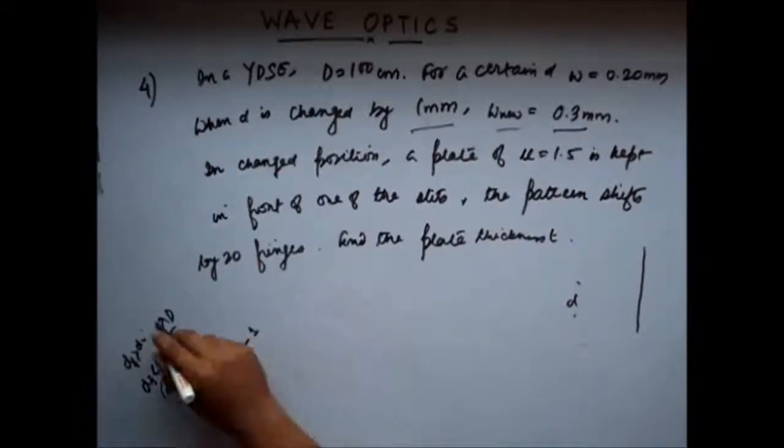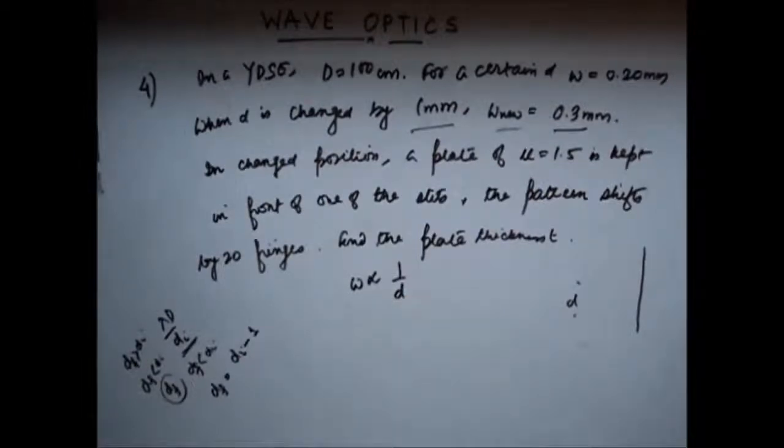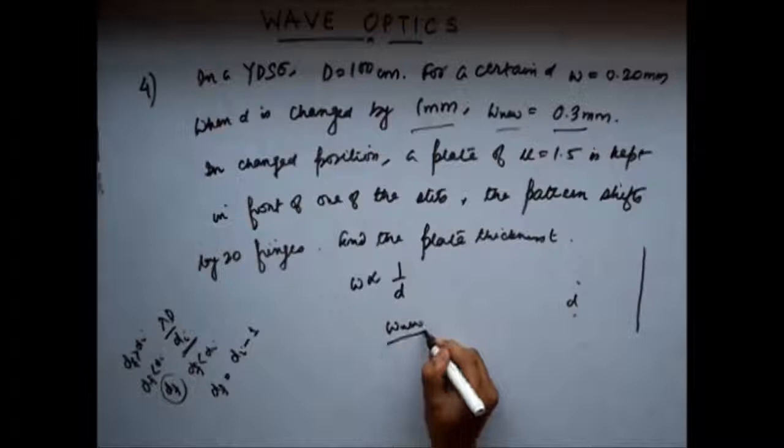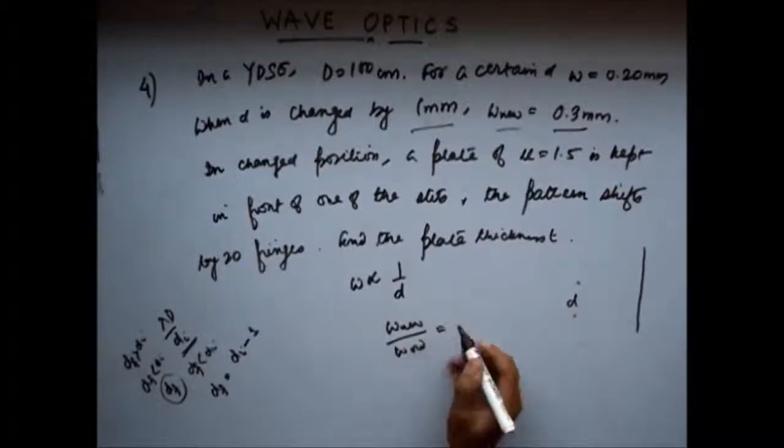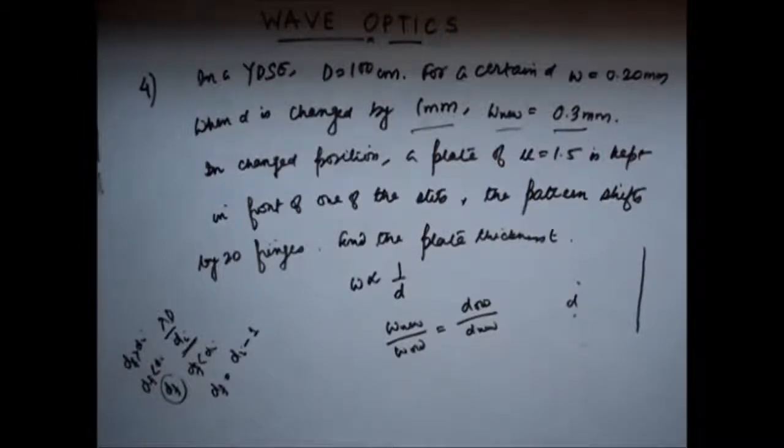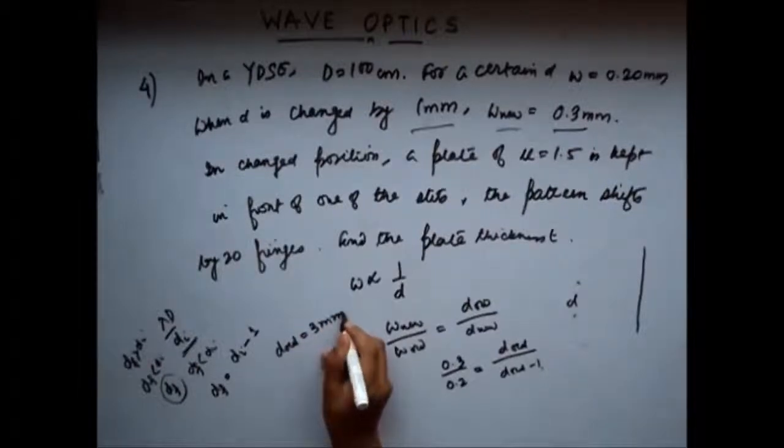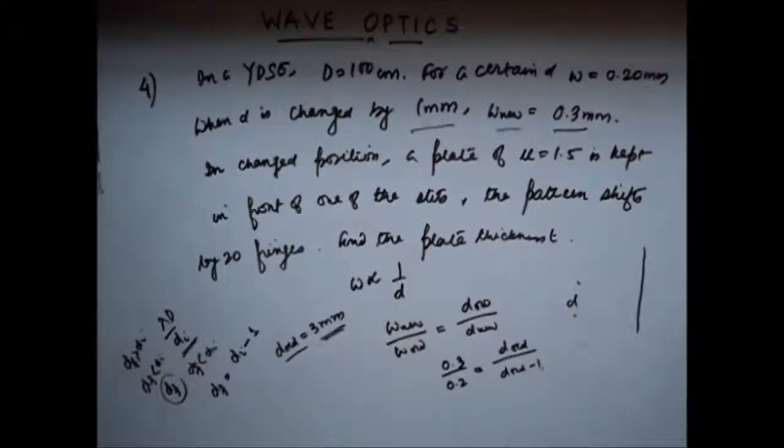Where this appears in the denominator. dF is less than dI, that means w nu is greater than wI. So, this is less than dI, that means dF is equal to dI minus 1. Now, you see the other things remaining constant, width of the fringe is proportional to 1 by d. So, I can write w nu by w old is equal to d old by d nu. So, this is 0.3 by 0.2. d old is, let us say d old only and d nu is d old minus 1. If you solve this, you will get your d old as 3 mm. So, the initial distance between the slits was 3 mm.